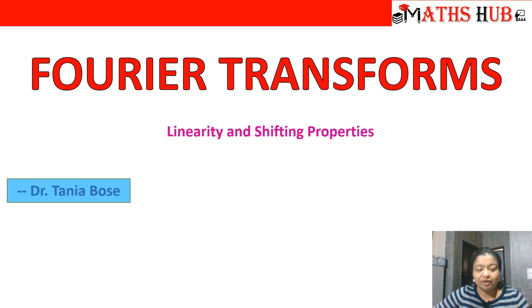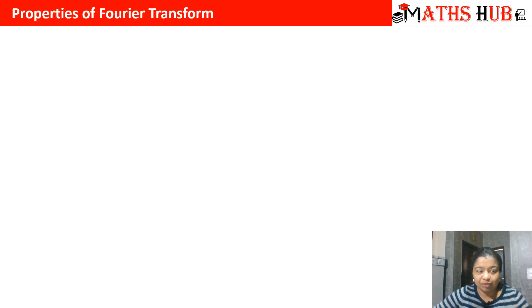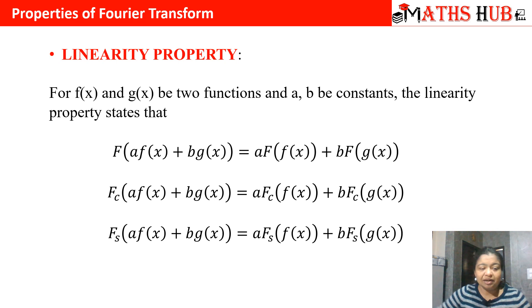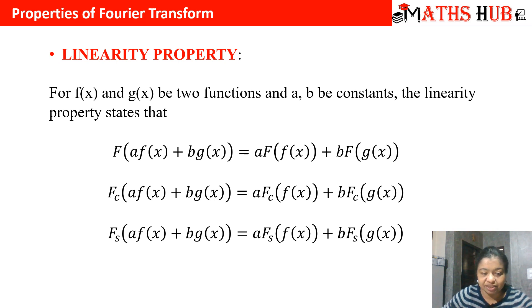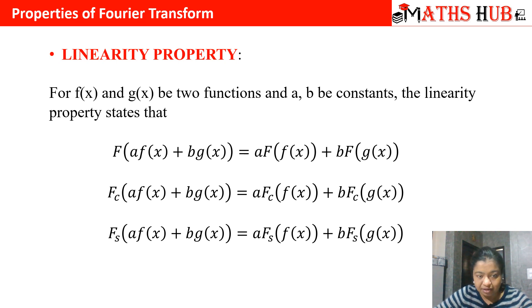Let us see what the linearity property is. The linearity property says that whenever we have two functions f(x) and g(x) and two constants a and b, then if you apply the Fourier transform on a composite function a·f(x) + b·g(x), you can split the Fourier transform. The constants can be taken out: a times the Fourier transform of f(x), plus b times the Fourier transform of g(x).